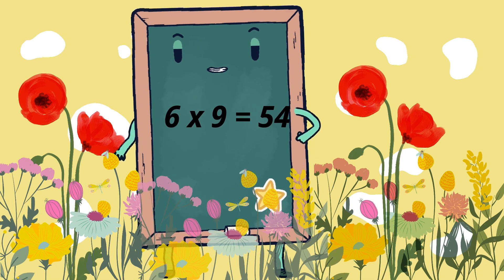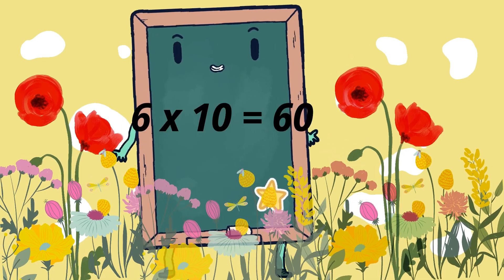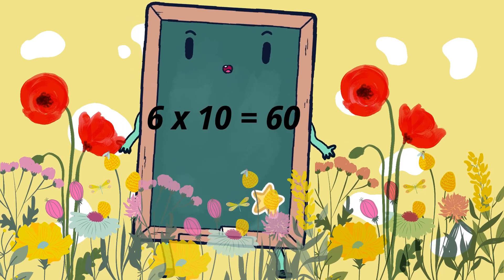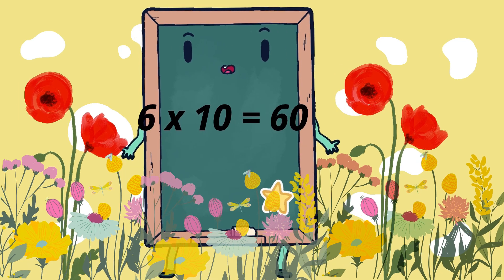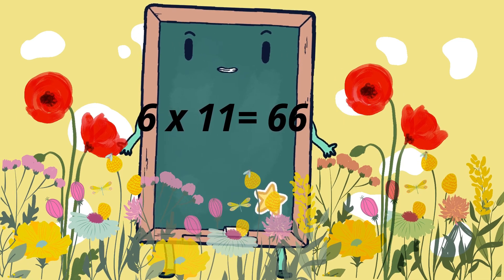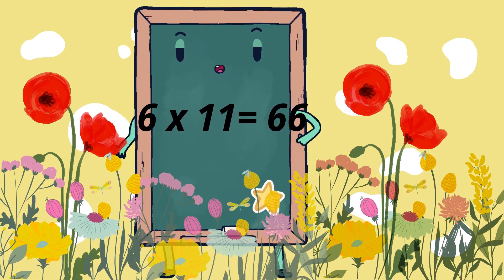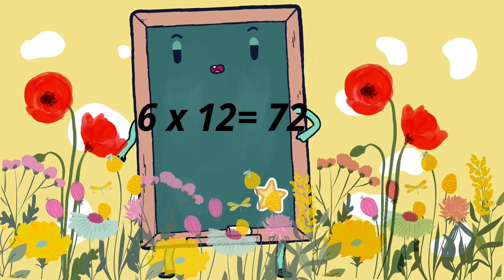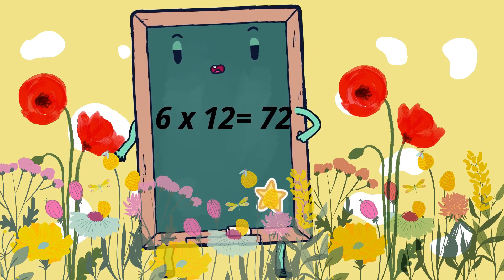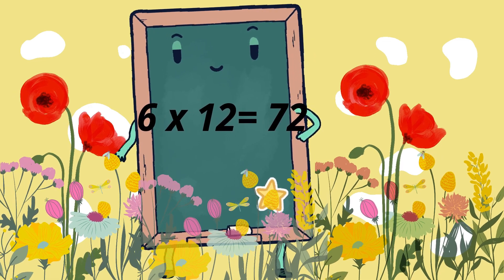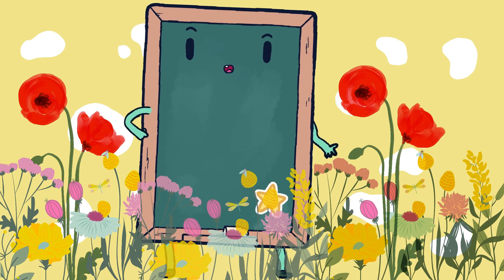6 9 is 54, 6 10 is 60, 6 11 is 66, 6 12 is 72. So kids, let's quickly do it once again.